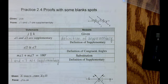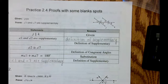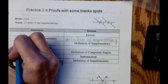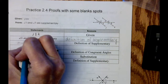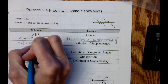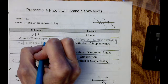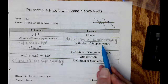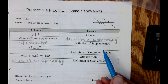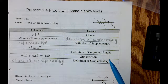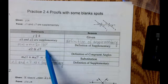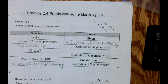We can take the idea that angle one and angle two are supplementary and rewrite it as: the measure of angle one plus the measure of angle two equals 180 degrees. This still relies on the definition of supplementary.